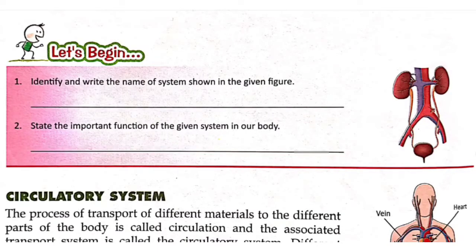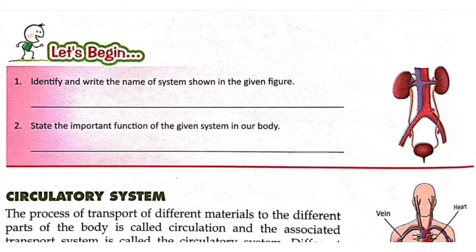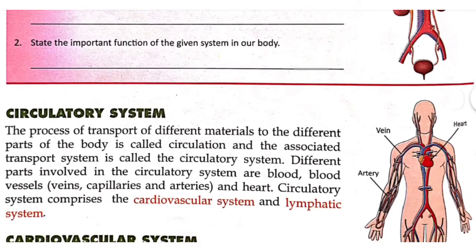Wherever two kidneys are mentioned, you can directly say it is the excretory system, as both kidneys belong to it. So the first question — 'Identify the name of system shown in the given figure' — has the answer: excretory system. The second question asks for an important function of the system, which is purification of our blood. The excretory system removes toxic substances from our blood.